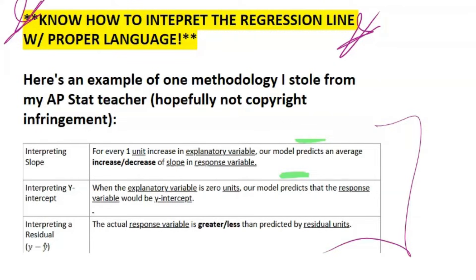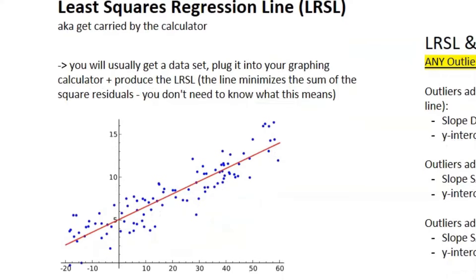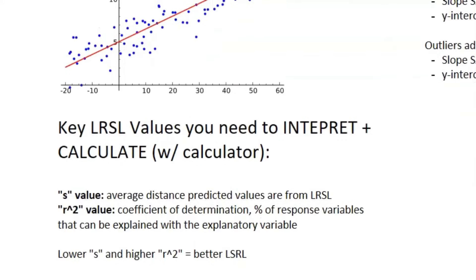And now let's talk about the least squares regression line. So basically you'll get a big data set and you're going to plug it into your graphing calculator, and then you can use a calculator function to produce the least squares regression line. It's the line that minimizes the sum of the square residuals. You don't need to know what that means, but basically it's pretty much a best fit line. So the key things you know about this is that you can also find these values with your calculator. The S value is your average distance the predictive values are away from the LSR. And then your R squared value is the coefficient of determination. That's the percent of your response variables that can be explained with the explanatory variable. And for an optimal least squares regression line, you want as low of S value as possible and as high of R squared value as possible.